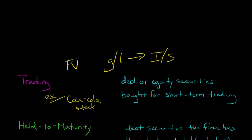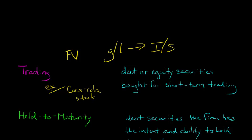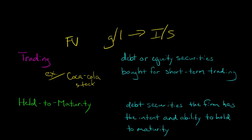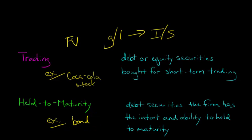Trading securities is one thing. We've also got something called held-to-maturity, which is basically debt securities — not equity — that the firm has the intent and the ability to hold to maturity. If the firm doesn't intend to hold it to maturity, or they can't because they're financially constrained and don't have the ability, then it's not a held-to-maturity security. A classic example is a bond: if the firm intends and has the ability to hold that bond to maturity, then that's a held-to-maturity debt security.